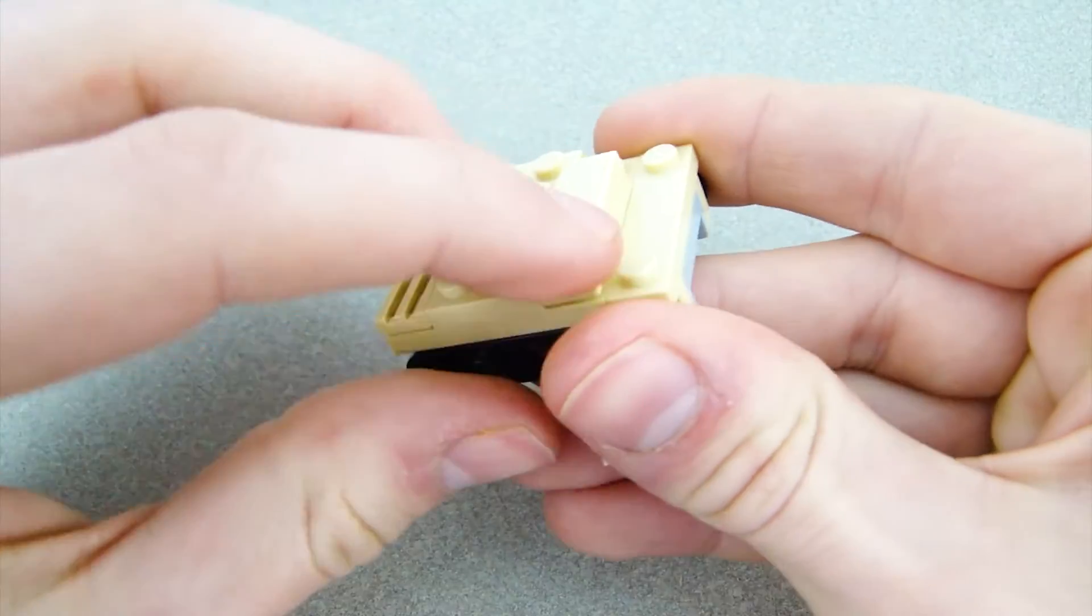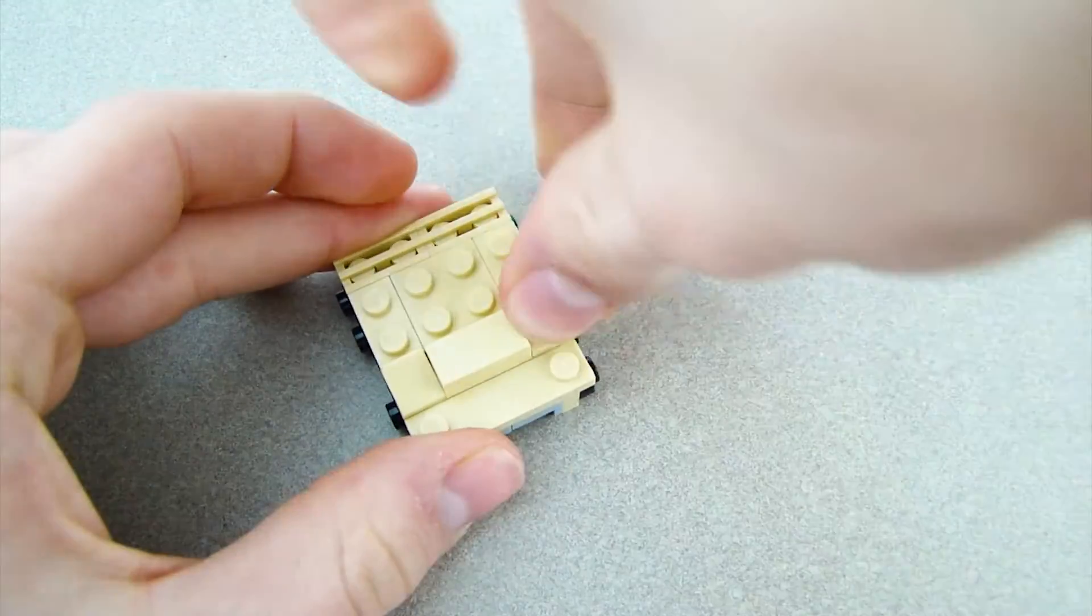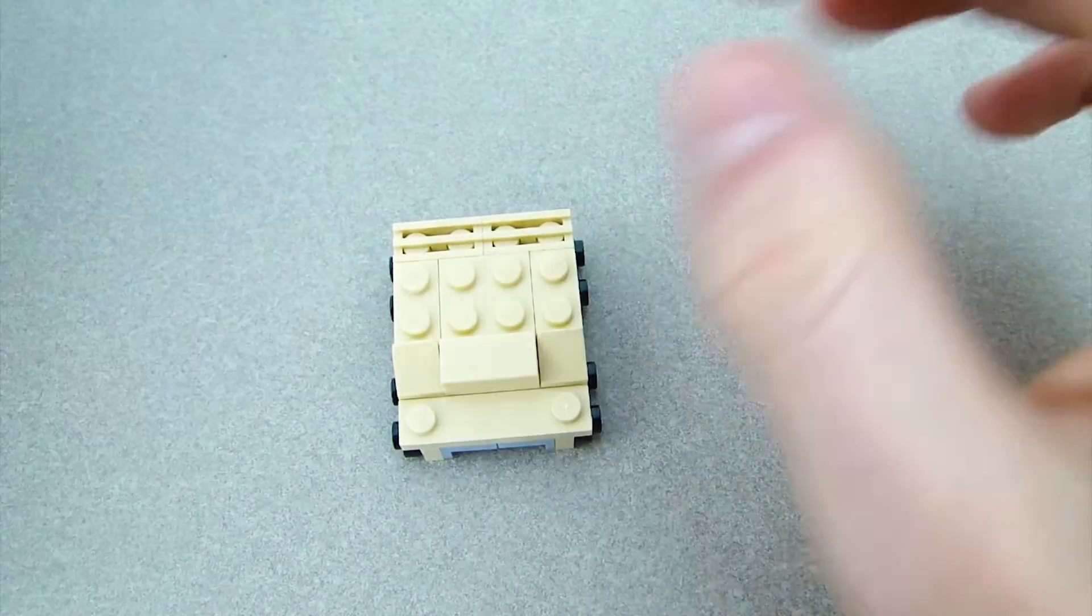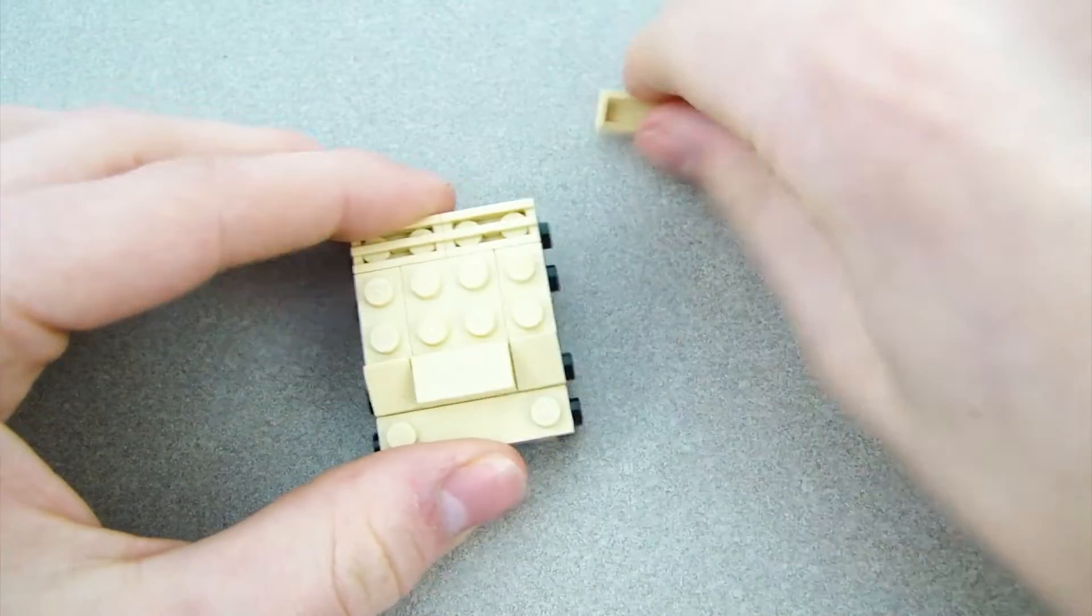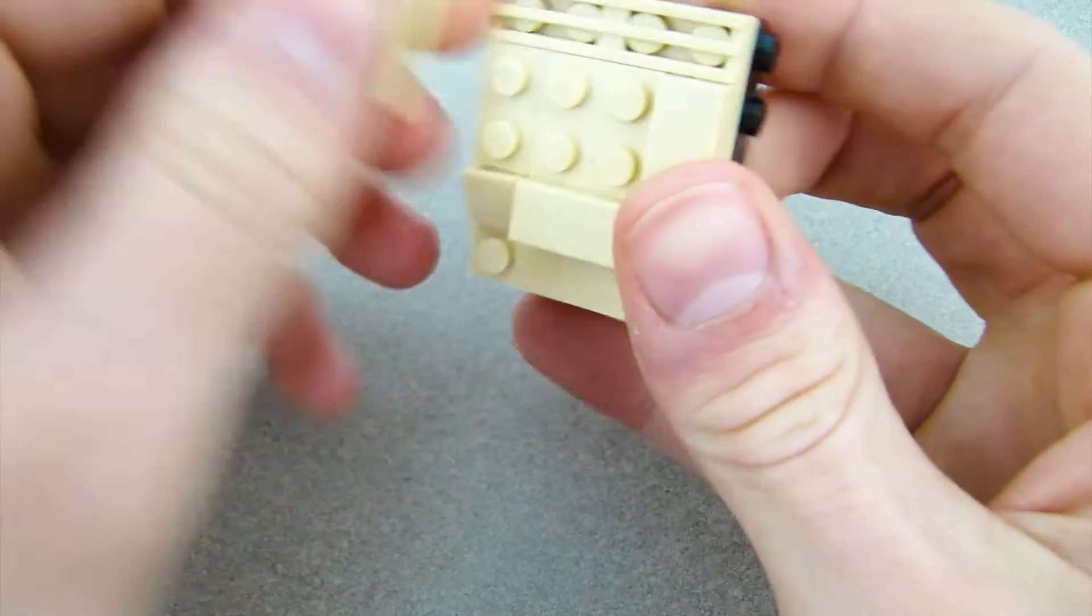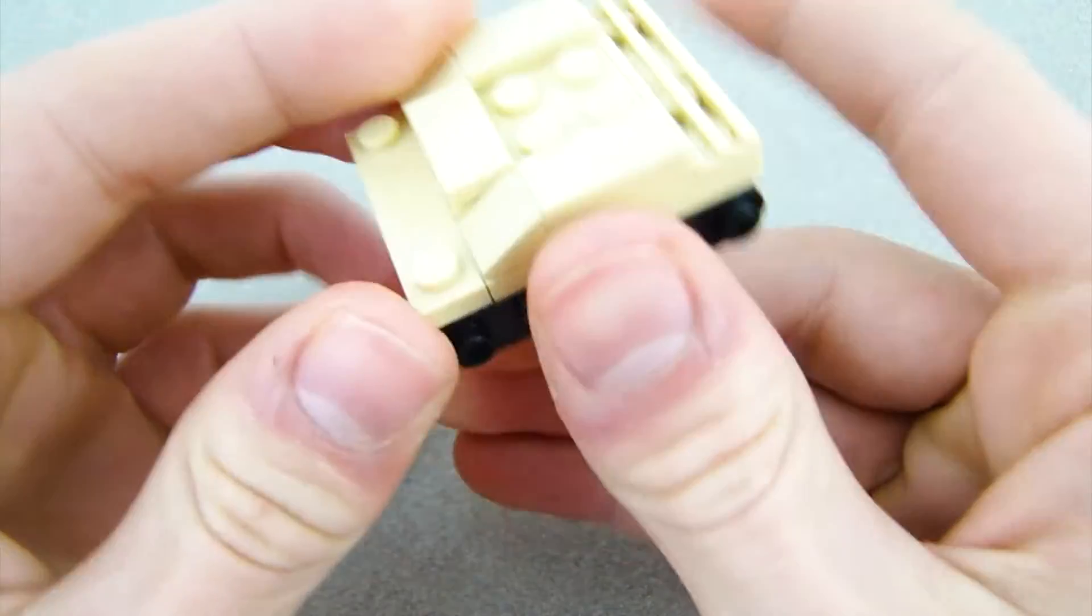Then up front, two 1x1 slopes, right there. And then on top of these two 1x2s right here, put a tile like that. And then set this off to the side.